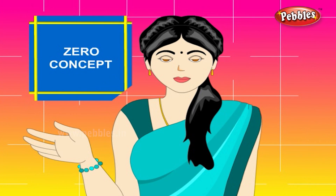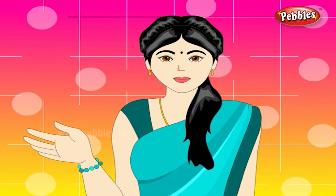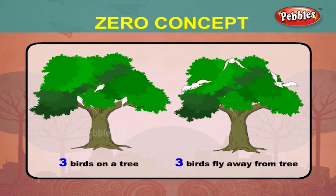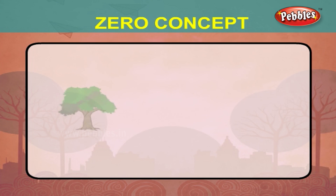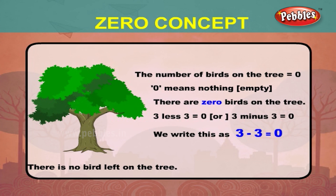Zero concept. Zero means nothing. Let us see an example to understand this. There are three birds on a tree. When all the three birds fly away from the tree, there is no bird left on the tree. The number of birds on the tree is equal to zero. Zero means nothing — there are zero birds on the tree.